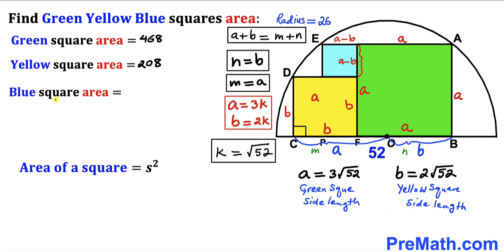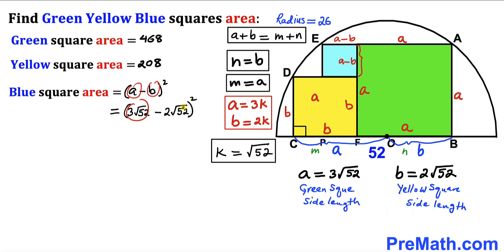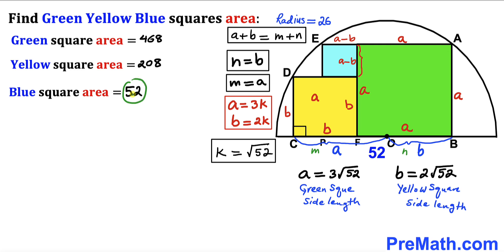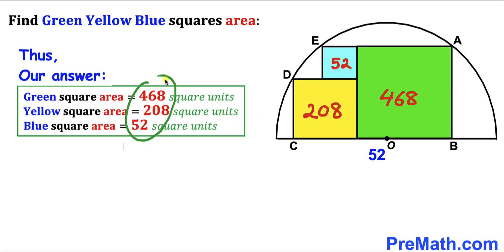Finally, the area of the blue square, whose side length is a − b = 3√52 − 2√52 = √52, is (√52)² = 52 square units. So the three areas are: green = 468 sq units, yellow = 208 sq units, blue = 52 sq units. Thanks for watching, and please don't forget to subscribe for more exciting videos!